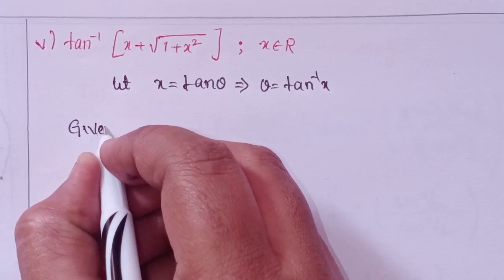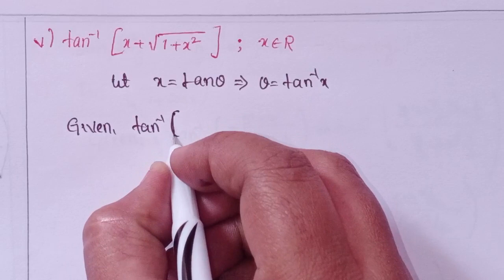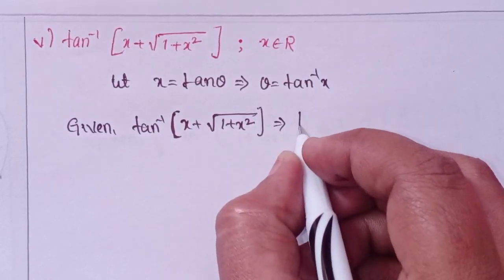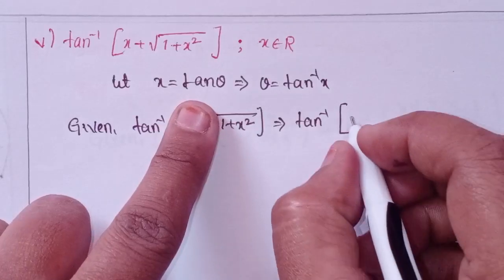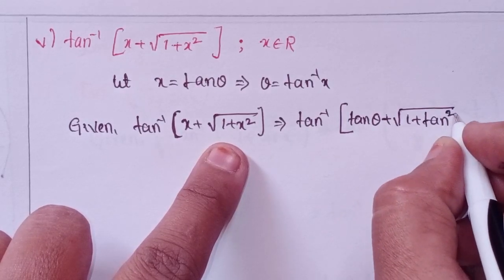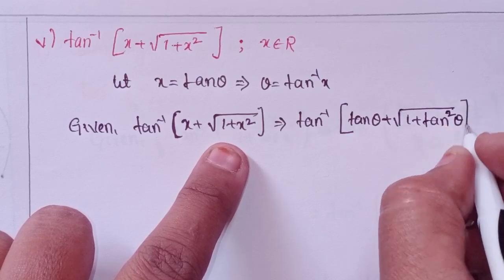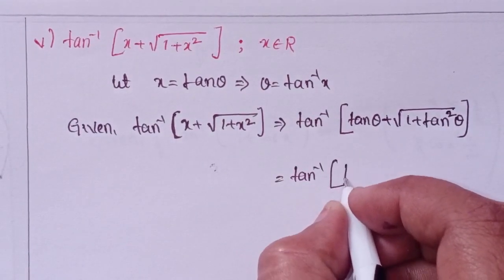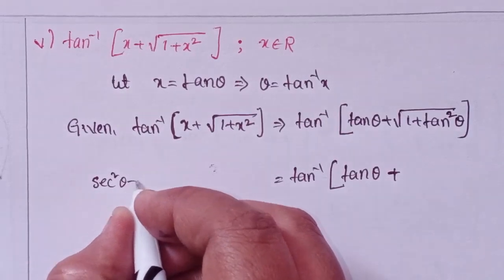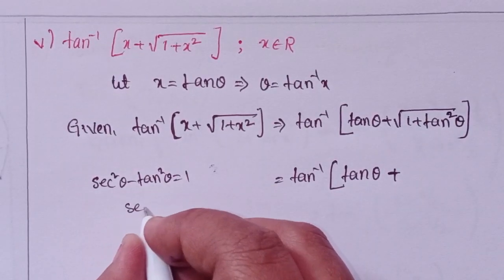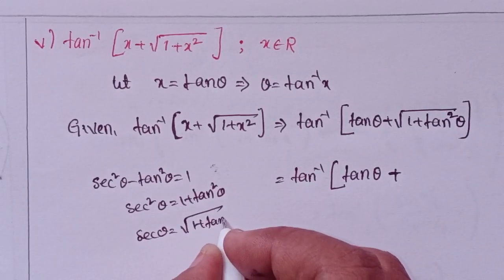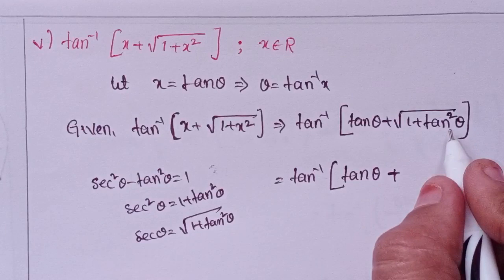Given tan inverse of (x plus square root of 1 plus x²). Substituting x equals tan θ, we get tan inverse of tan θ plus square root of 1 plus tan²θ. Since sec²θ minus tan²θ equals 1, sec²θ equals 1 plus tan²θ, so secant θ equals square root of 1 plus tan²θ. Thus we have tan inverse of tan θ plus sec θ, where tan means sin θ over cos θ and secant means 1 over cos θ. Taking LCM as cos θ gives tan inverse of (sin θ plus 1) over cos θ, or (1 plus sin θ) over cos θ.